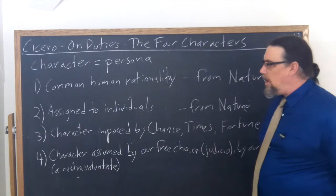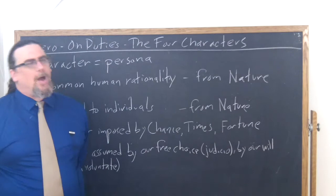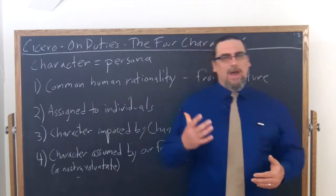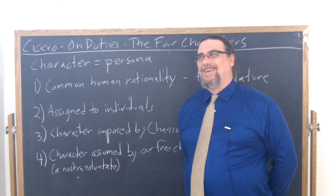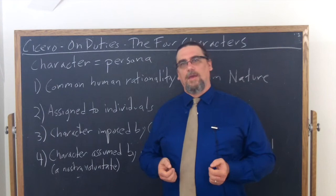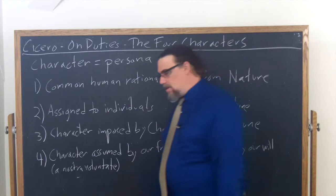The third character is that which ends up being imposed or assigned to us by factors outside of our control. He talks about chance — kasus — how things happen to go. He talks about the times — tempus. Sometimes we talk about a person having greatness imposed on them by being in the right place at the right time, or being in the wrong place at the right time. The idea is that there are all sorts of conditions we find ourselves in that may offer us things, impose things upon us, or take things away from us. And that becomes part of who we are as well.